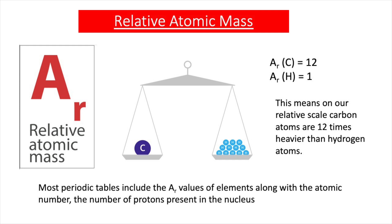It's important to mention that you will not be required to learn the AR values of different elements — these are given to you in exams. Sometimes they're given in the exam question, but most of the time they're listed in the periodic table. Most exam boards give you a copy of the periodic table with AR values listed alongside the symbol together with the atomic number. The atomic number is the number of protons present in the nucleus.